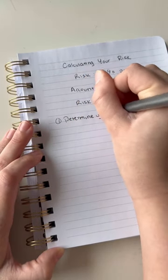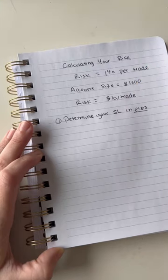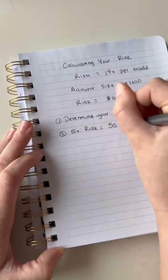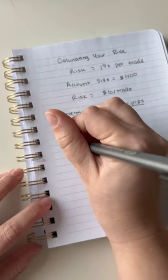So step one, what you want to do is determine your stop loss in pips. So based on where you would normally place your stop loss below structure, whatever. Example, let's say that's 50 pips, okay?